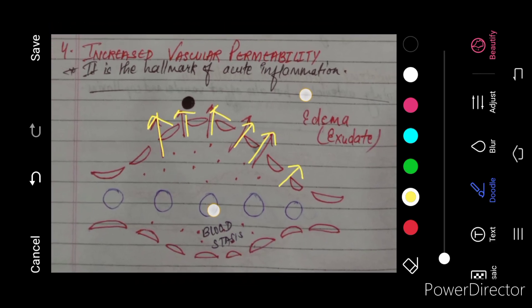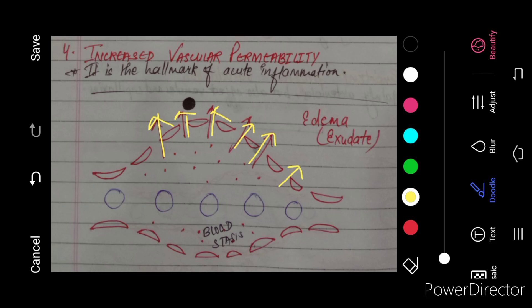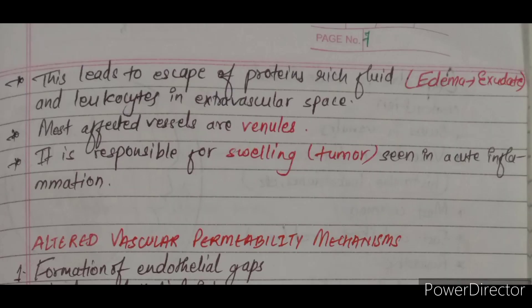From these gaps, fluid along with protein is also coming out, so edema will increase. This type of edema is known as exudate. Remember, in the initial stage due to increase in hydrostatic pressure in step three, it was called transudate. But later on in step four, due to increase in vascular permeability, the type of edema is exudate. This leads to escape of protein-rich fluid. Most affected vessels are venules, and it is responsible for swelling — that is tumor — seen in acute inflammation.